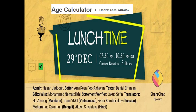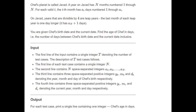Today I'll be discussing December lunchtime second problem: Age Calculator. The problem states that chef lives on a planet that has N months, and the i-th month has A[i] days. If a year is divisible by four then it is a leap year, and the last month of that year will contain an extra day.